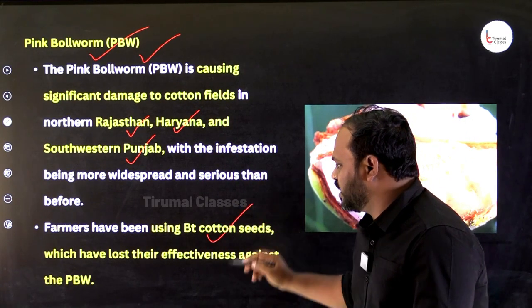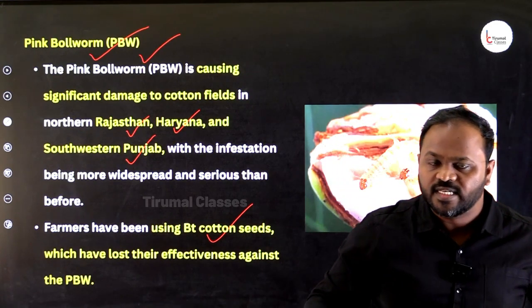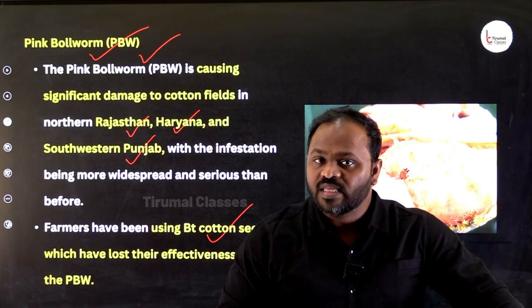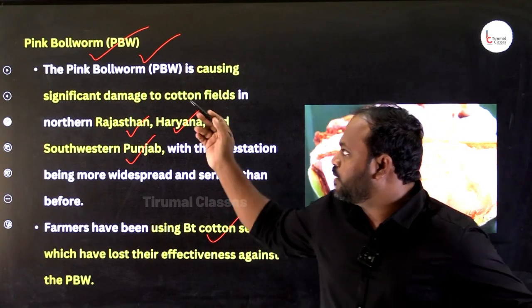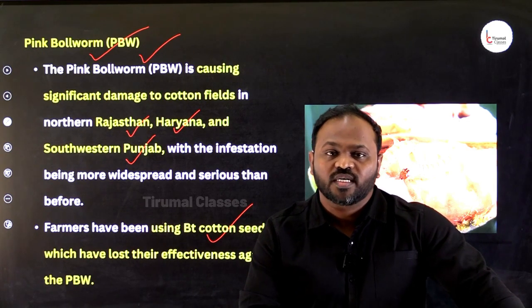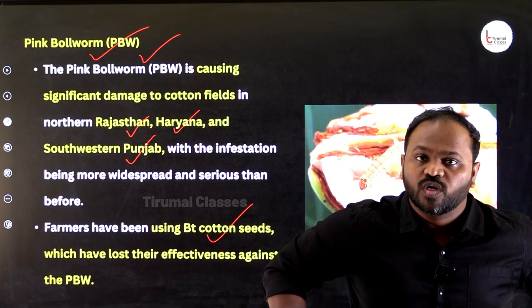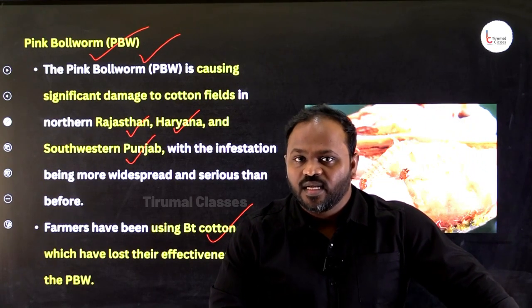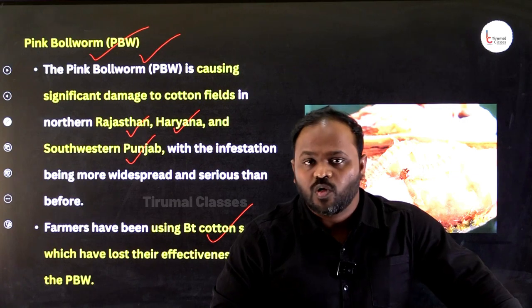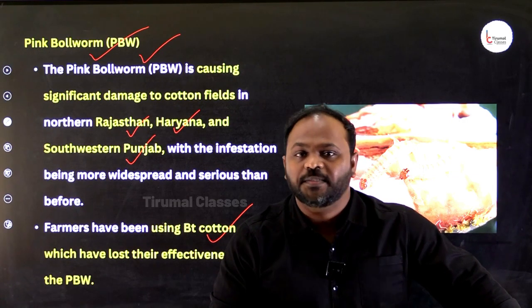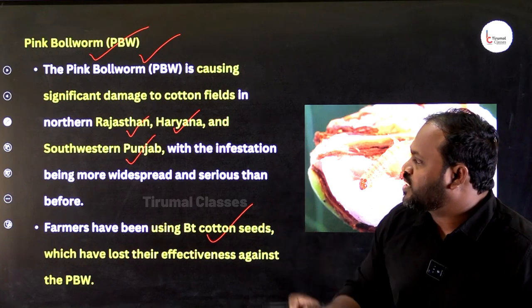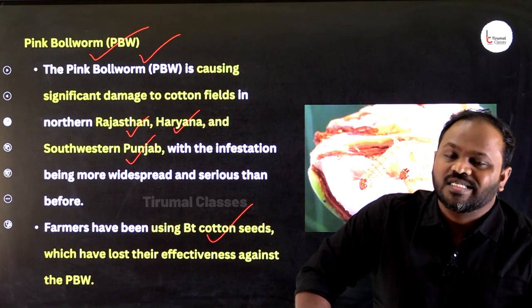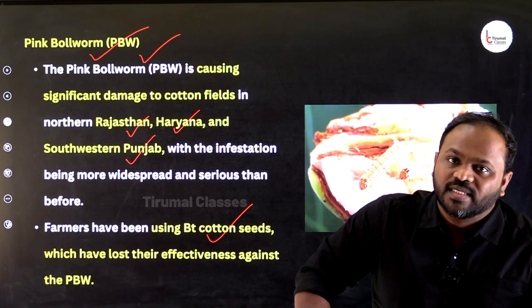Even though these states are using BT cotton seeds — Bacillus thuringiensis — which are pest-resistant, the Pink Bollworm is still affecting the BT cotton and impacting overall cotton production in India. Cotton is a crop that always requires a slightly excess amount of water.